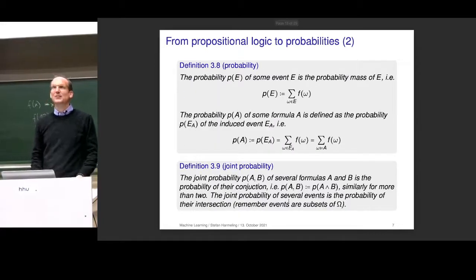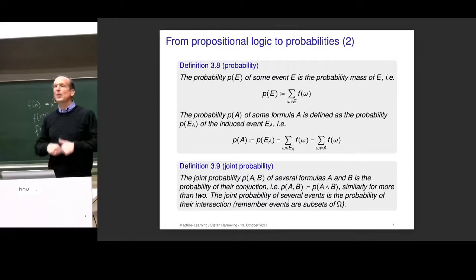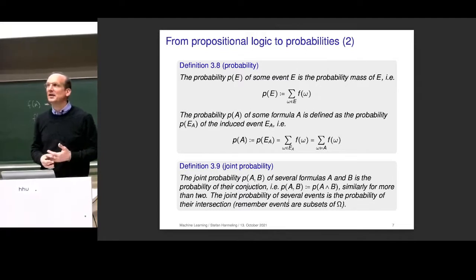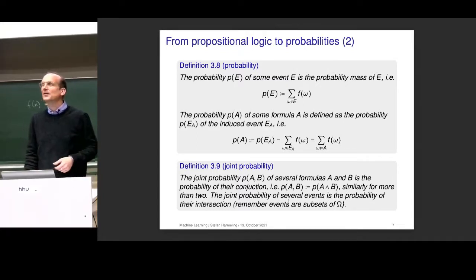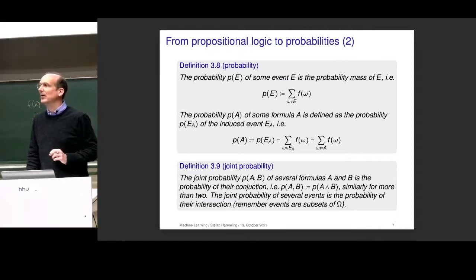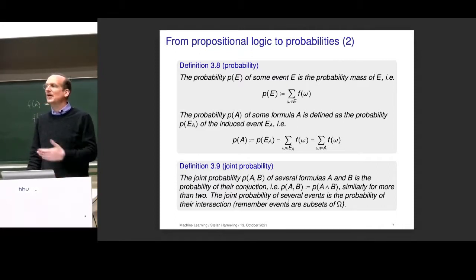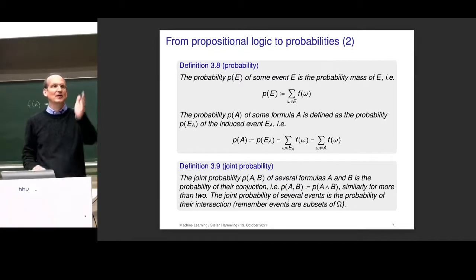Any questions up to here? For everyone who has done this already in probability theory, this is just a repetition of the simplest possible case — finitely many variables where everything is nice.